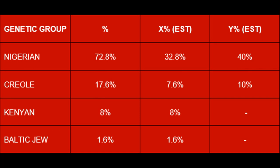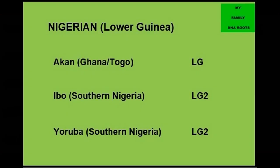The X column in the table represents the estimated percentage spread for the maternal side of my family, and the Y column for my paternal side, showing that my mother's side has more DNA blood diversity, with her Kenyan and Baltic two elements coming into play. The Nigerian genetic group is the largest in my DNA makeup, being almost three times as great as all the other genetic groups put together. It is basically made up from three ancient West African nations in the lower Guinea: the Akan from present-day Eastern Ghana and Togo, and the Ibo and Yoruba nations both in modern-day southern Nigeria.